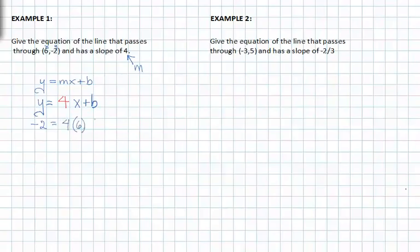Now that we've substituted 4 in for m or our slope, we still need to solve for b or the y-intercept.